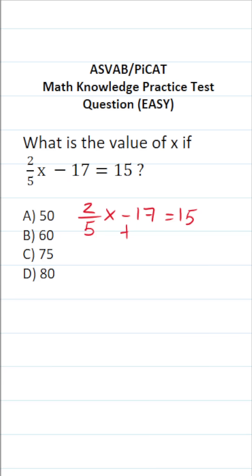So the first thing we're going to do is add 17 to both sides of this equation. In doing so, this crosses out, leaving you with two-fifths x over here. What is 15 plus 17? If you can't do that mentally, work it out the old-fashioned way. 5 plus 7 is 12, carry a 1. 1 plus 1 plus 1 is 3, so this is 32.